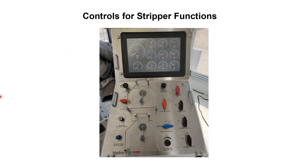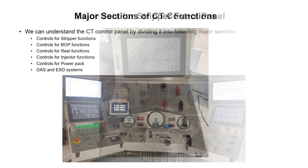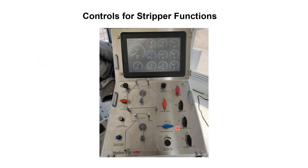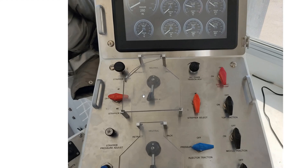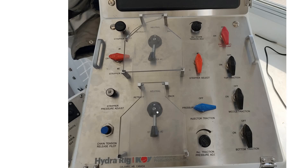We will discuss the first section — controls and gauges for stripper function. In this control panel, the extreme right part contains the controls for stripper functions. Here we have a magnified view of the stripper functions panel.